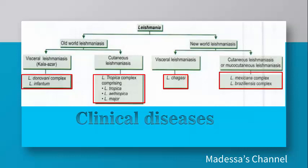The clinical diseases caused by Leishmania species vary by site of infection. Leishmania donovani and L. infantum cause visceral leishmaniasis in the old world. L. tropica, L. aethiopica, and L. major cause cutaneous leishmaniasis. In the new world, Leishmania chagasi causes visceral leishmaniasis, while L. mexicana and L. braziliensis cause cutaneous or mucocutaneous leishmaniasis.